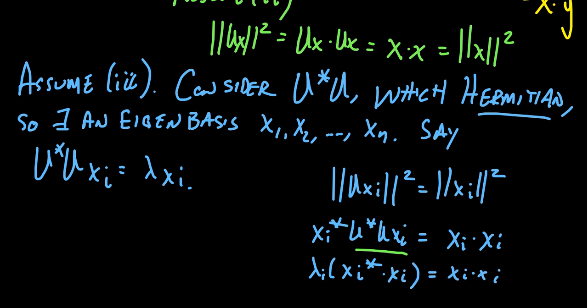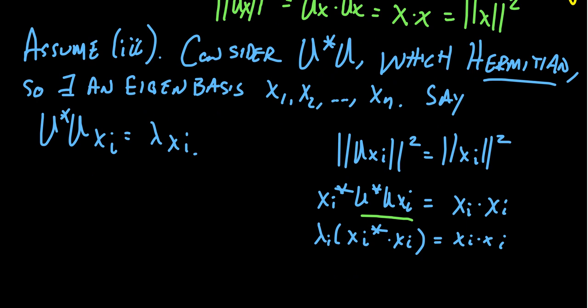So notice what happens here. We have this factorization that something times xi. I guess I don't need the star in this situation. It's kind of redundant. So I put the dot product and the star. So we have xi dot xi. And then we have xi dot xi on both sides of the equation here.